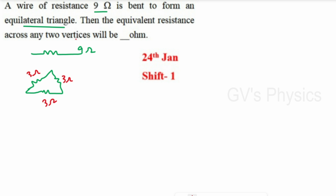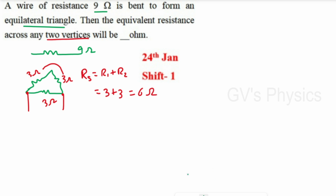We need the equivalent resistance across any two vertices. Choosing two vertices, the two 3 ohm segments on one path are in series: R = R1 + R2 = 3 + 3 = 6 ohm. Now this 6 ohm is in parallel with the remaining 3 ohm.